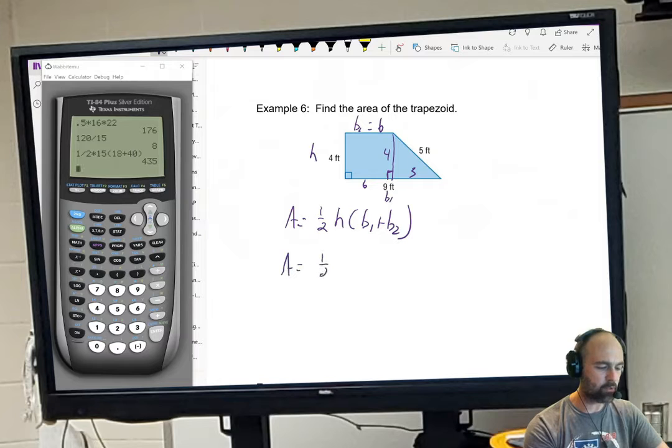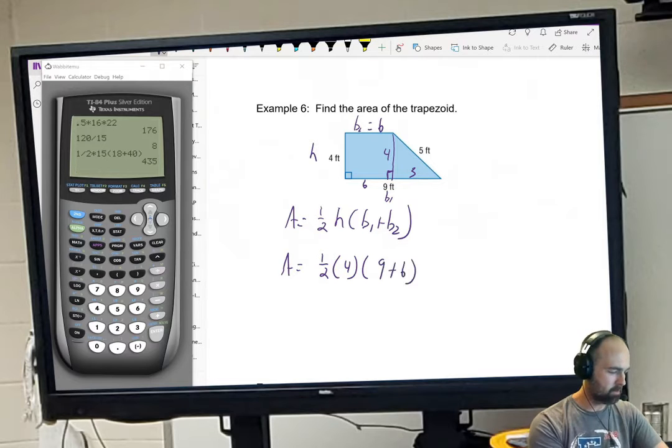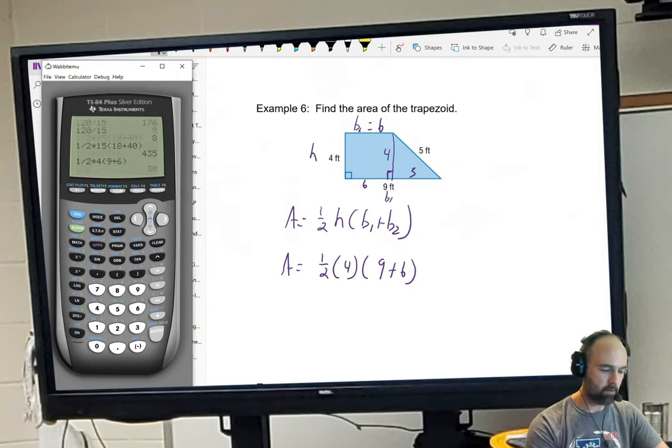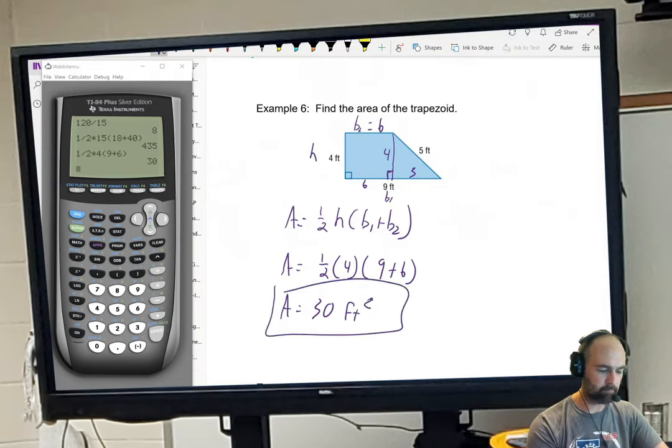So area is one half times 4 times 9 plus 6. So one half times 4 times 9 plus 6, and my area equals 30 feet squared. Simple enough.